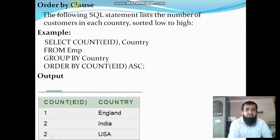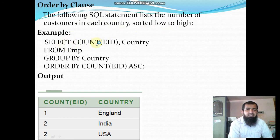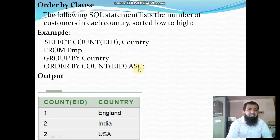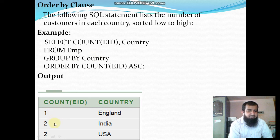Next is using ORDER BY along with GROUP BY. The following SQL statement lists the number of employees in each country sorted from low to high: SELECT COUNT(EID), country FROM EMP GROUP BY country ORDER BY COUNT(EID) ASC. Use ASC for ascending order and DESC for descending order. In ascending order, the result comes as 1, then 2, then 2.